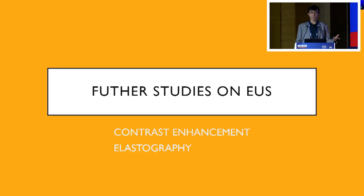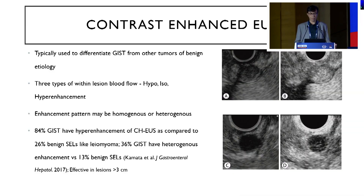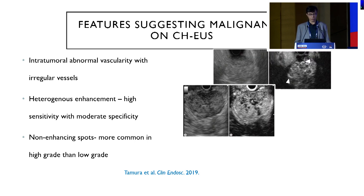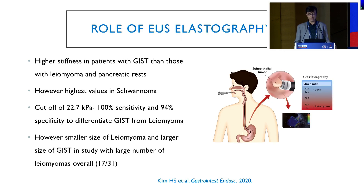Once you have evaluated, you can do further studies like contrast enhancement and elastography. On contrast enhancement, you can differentiate GIST from other tumors, usually leiomyoma. GIST is a hyper-enhancing lesion and may also give heterogeneous enhancement as seen in the lower photograph. Features suggesting malignancy on contrast EUS are intratumoral abnormal vascularity with irregular vessels and heterogeneous enhancement — these are two important factors. You can also see non-enhancing spots within the center of the tumor.